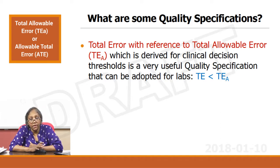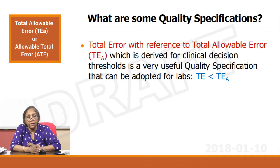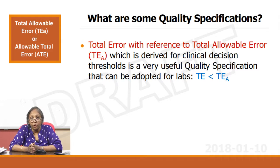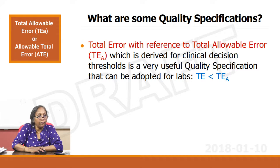Total error with reference to total allowable error is a very useful and simple way of understanding and setting your quality specification. All you need to say is: in my lab I am going to have my total error less than the total allowable error. TEa, which is derived from the clinical decision threshold, is a very useful quality specification that can be adopted for laboratories when you set TE less than TEa.